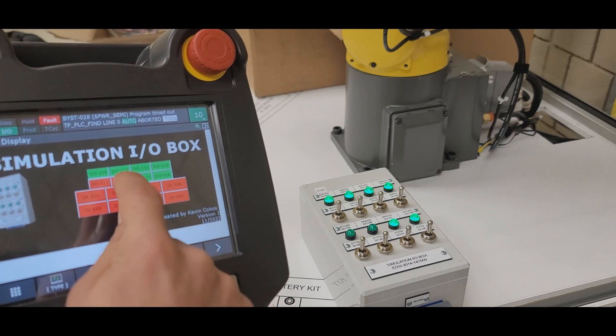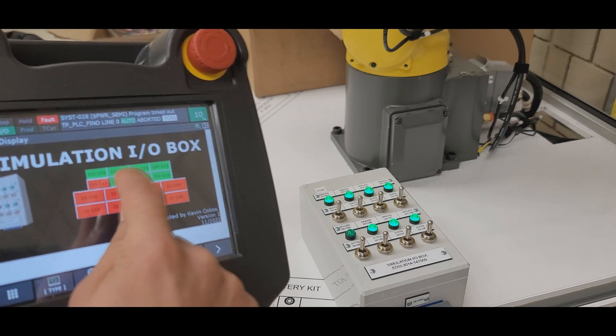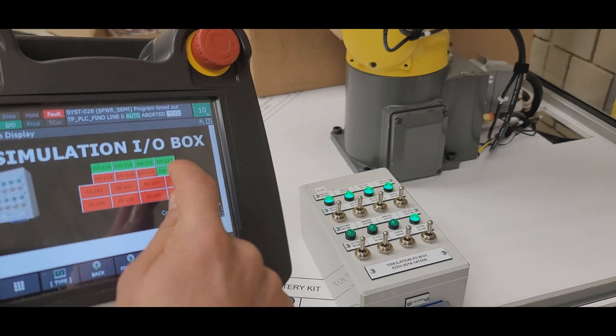In this example, we can see that we are sending some signals from the robot digital output, and the simulation I.O. box is reading those signals.